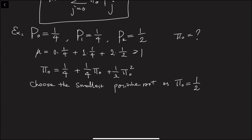The reason we choose the smallest positive root is more advanced — it requires proving using a fixed-point theorem on the moment-generating function — so we won't cover that here. That's it for this lecture.